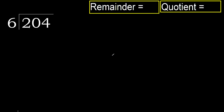240 divided by 6. 2 is less, therefore next. 20 is not less, therefore with 20: 6 multiplied by which number is nearest to 20 but not greater?